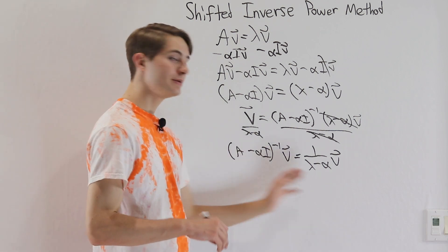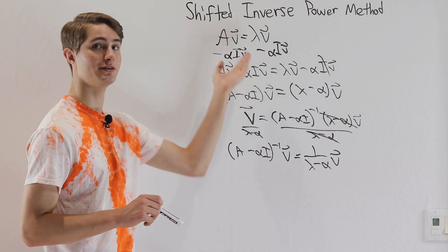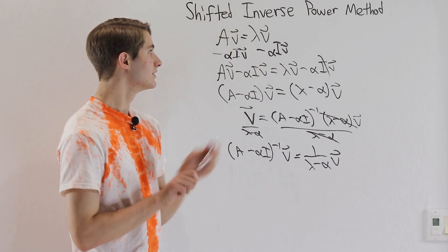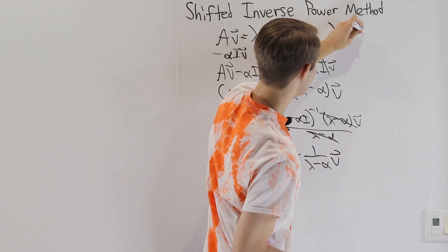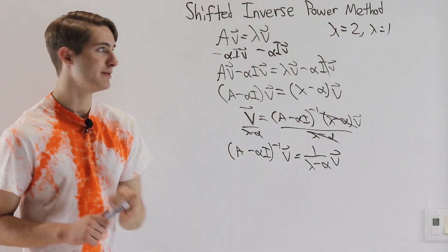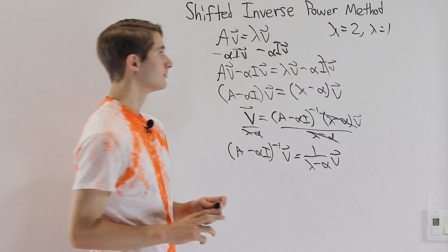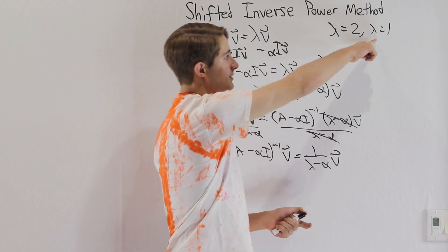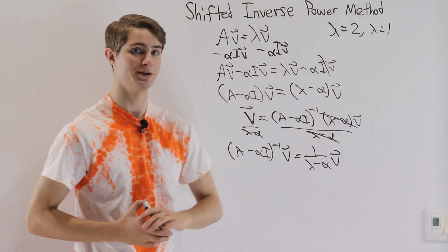Why would we want to do this? Couldn't we just use the power method on the original matrix? Well, let's say the matrix has two eigenvalues, lambda equals 2 and lambda equals 1. We could use the power method to find the eigenvalue and eigenvector for lambda equals 2. But we could never find lambda equals 1 with the original power method because it's not the dominant eigenvalue.